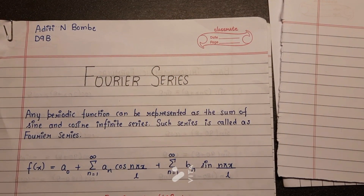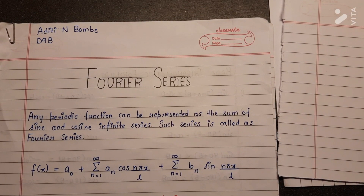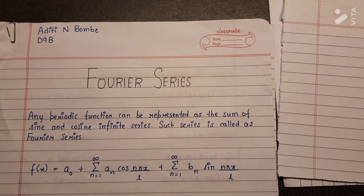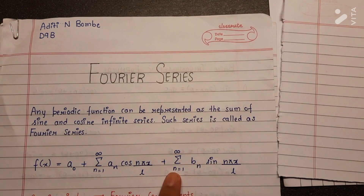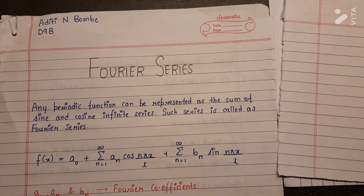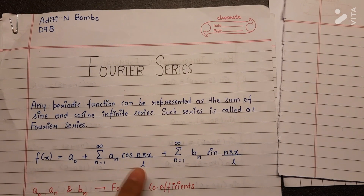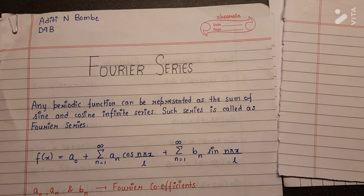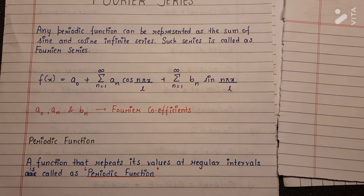My name is Aditi and my topic is Fourier series. Any periodic function that can be represented as the sum of sine and cosine infinite series is called a Fourier series. This is the general equation where a₀, aₙ, and bₙ are called the Fourier coefficients. A function that repeats its value after regular intervals is called a periodic function.